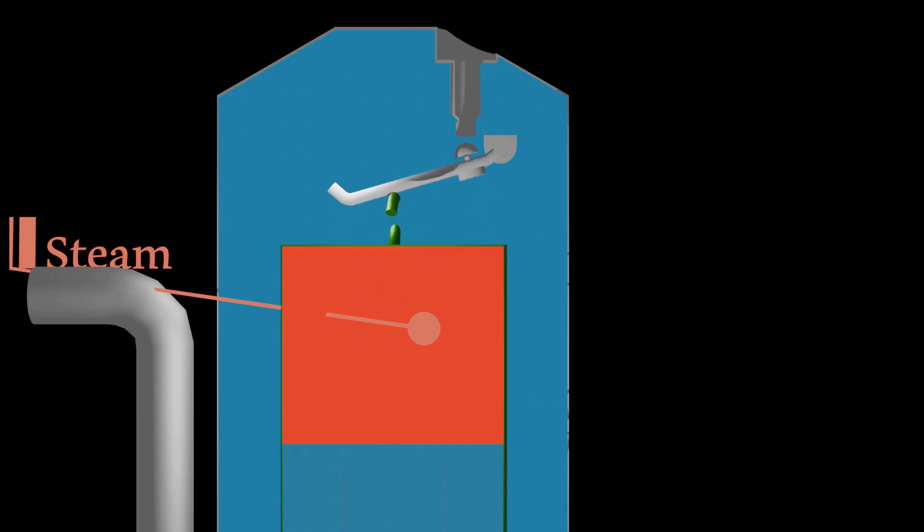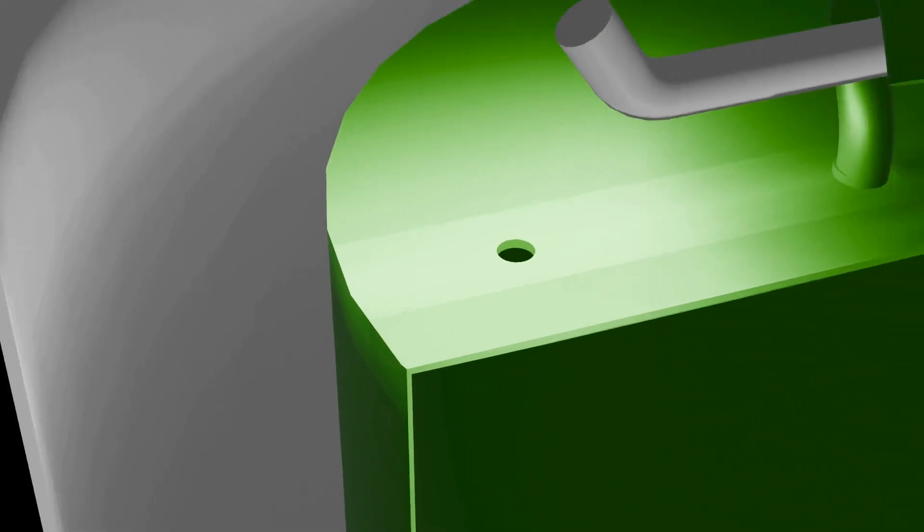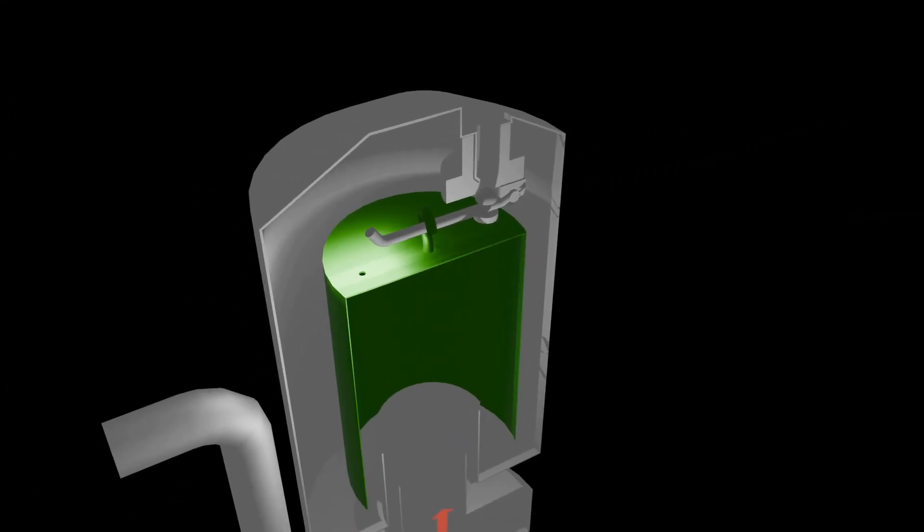One last thing is the small hole inside the bucket. This is used to relieve the non-condensable gases. One important question: what about the steam that escapes from this hole? The answer is that this amount of steam is so small that it will instantly condense as it escapes. Thanks for watching.